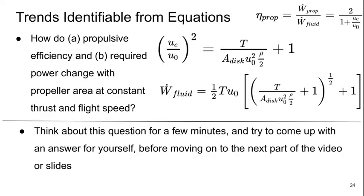So we can identify some trends from the equations we've put together now. How do the propulsive efficiency, the expression is up here, and the required power, the expression is here, change with propeller area, with increasing propeller area, if the thrust and the flight speed are constant.